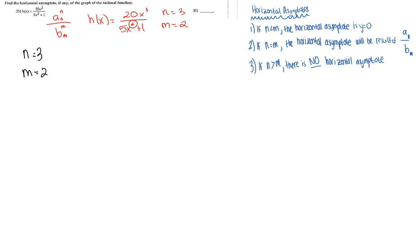Looking at the third case, which is our last option, we can see that 3 is greater than 2. So following the third case, we know there is no horizontal asymptote. And that is your final answer.